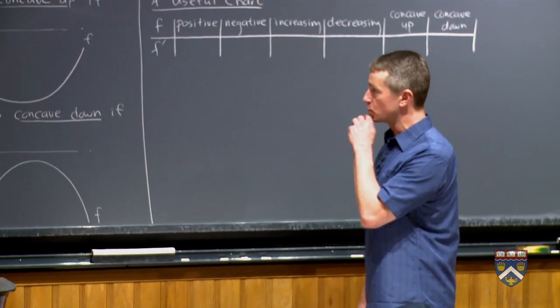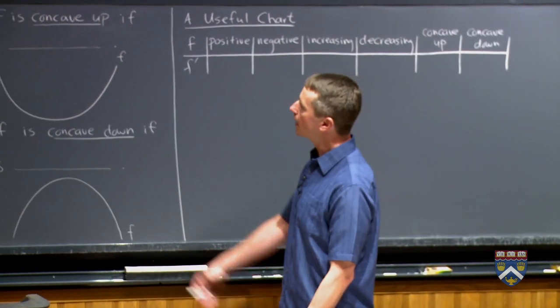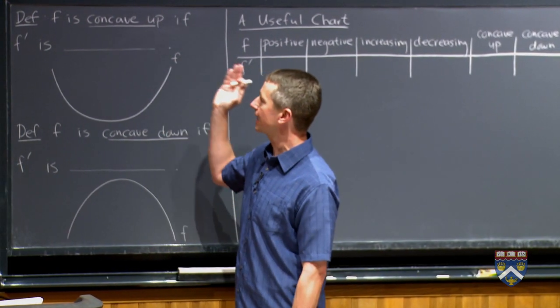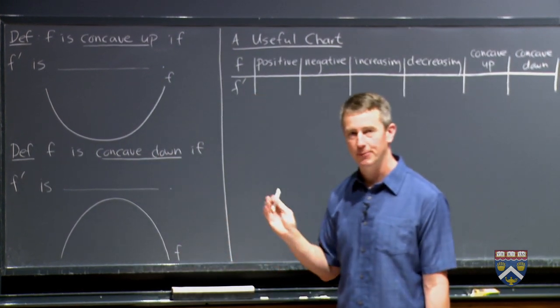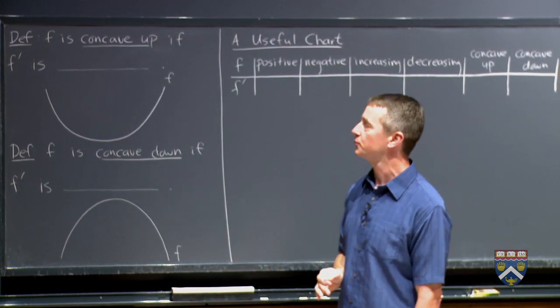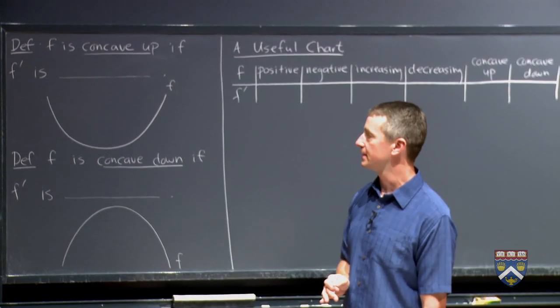For that, we need to introduce two new words. One word is f is concave up, and another one f concave down. I haven't filled in these definitions because we have an applet where we'd like you to experiment and see if you can figure out what word to put in these blanks.